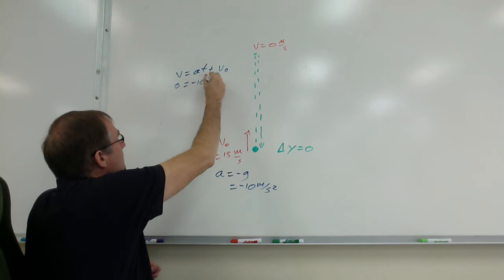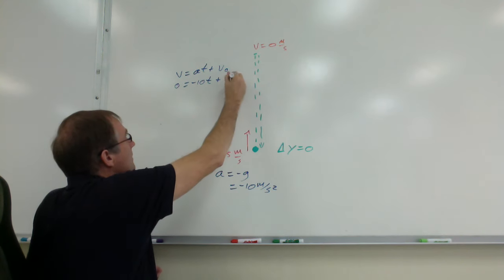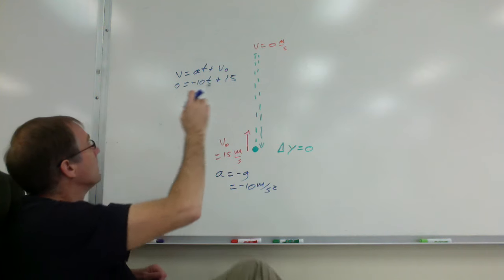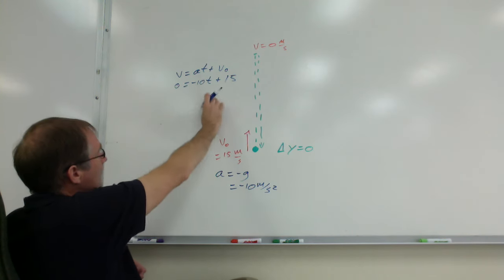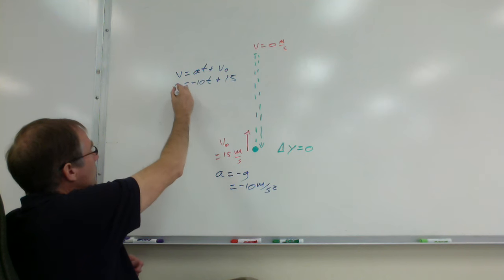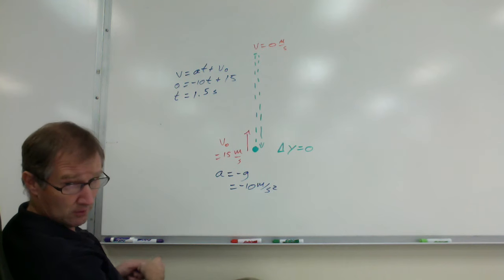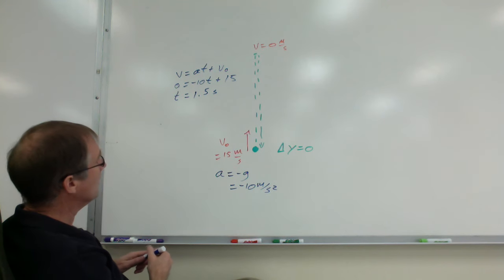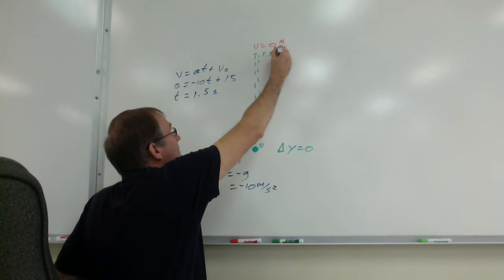that's negative 10. There's t, and this was launched at 15. So if I add 10t to the other side and divide through by 10, the time it takes to go up and stop at the top is 15 over 10, which is 1.5 seconds. So it takes 1.5 seconds to go up.